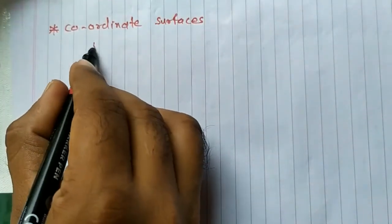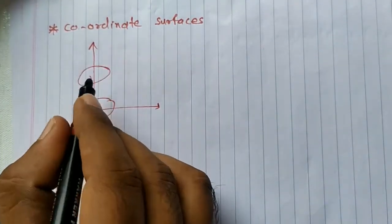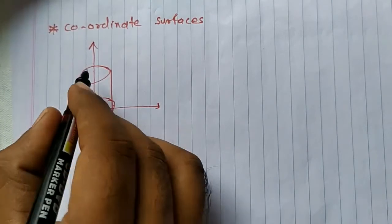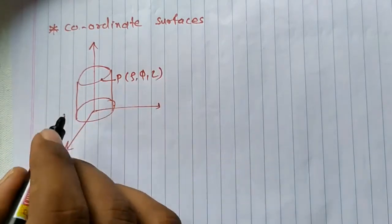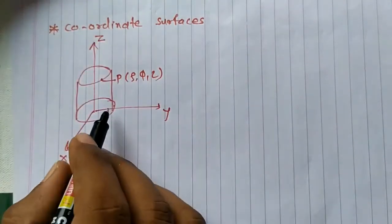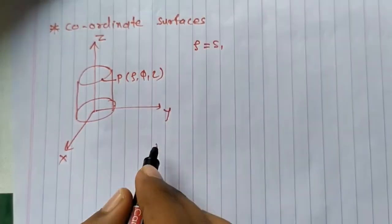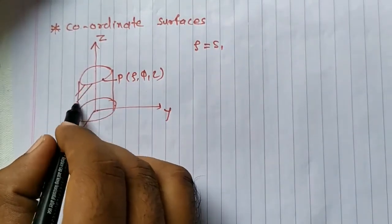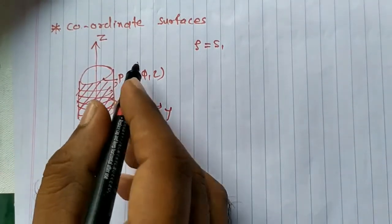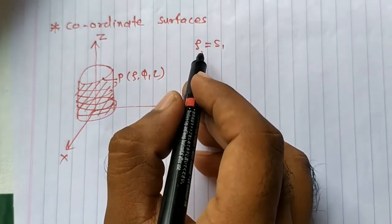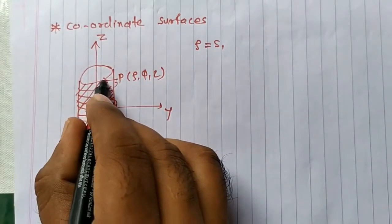Now we will go for coordinate surfaces. I will draw the diagram again: this is a cylinder and this is point P whose coordinates are rho, phi, and z. The first coordinate surface is rho equals s1. This surface will be the surface of a cylinder — a cylindrical surface. You can see this surface rho equals s1 is one of our coordinate surfaces.